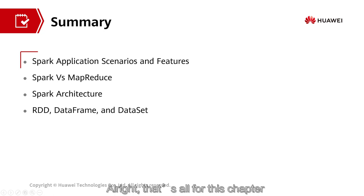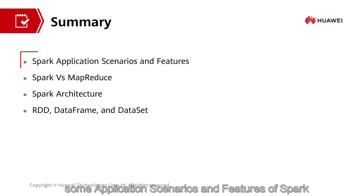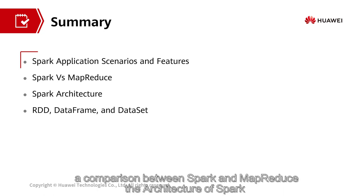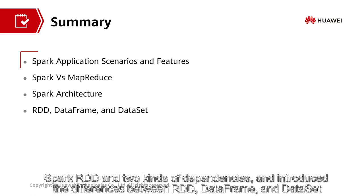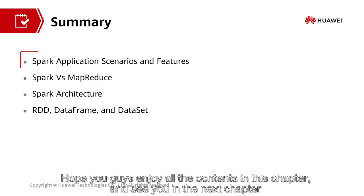All right, that's all for this chapter. In this chapter, we introduced what is Spark, some application scenarios and features of Spark, a comparison between Spark and MapReduce, the architecture of Spark, Spark RDD and two kinds of dependencies, and introduced the differences between RDD, DataFrame, and Dataset. Hope you guys enjoyed all the contents in this chapter, and see you in the next chapter.